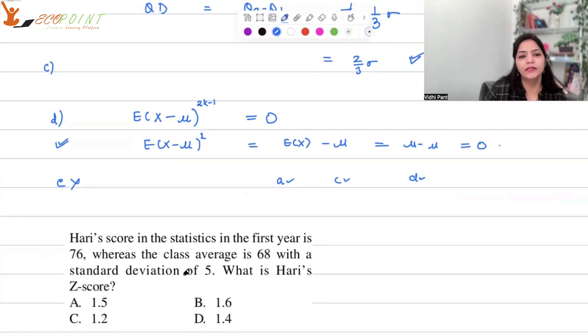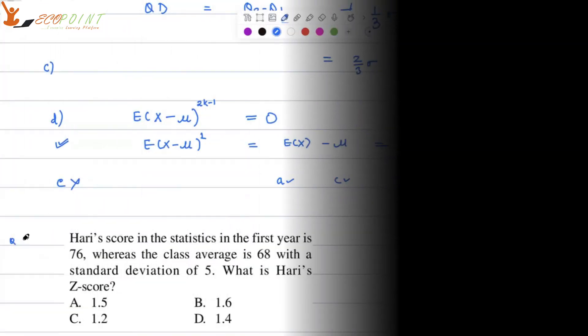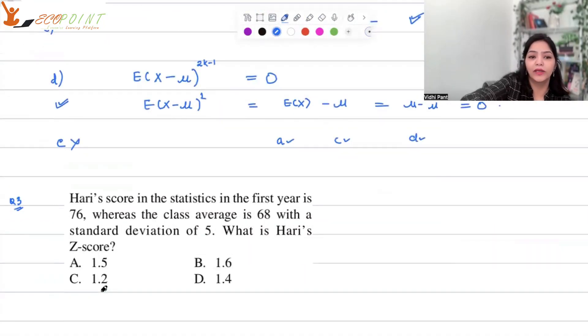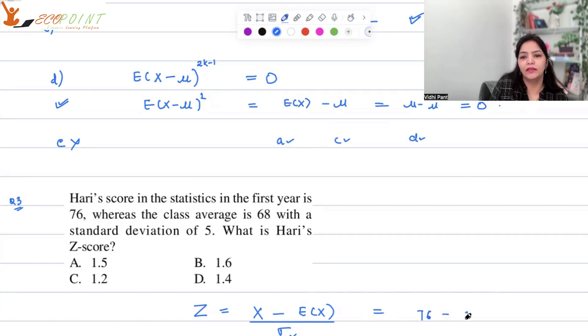Next question is, Hari's score in statistics in the first year is 76, whereas the class average is 68 with standard deviation of 5. What is Hari's Z score? Well, we just have to find out Z value here. Z is basically x minus expected value of x upon sigma of x. It's given to us: x value is 76, the mean value is 68, and the standard deviation is 5. So we will get 8 by 5 which is equal to 1.6. So option B is the correct option.